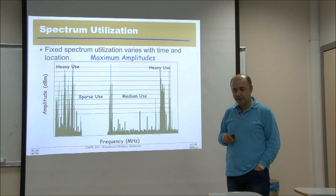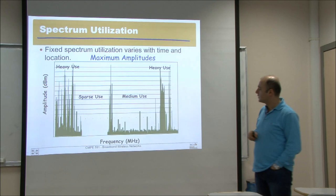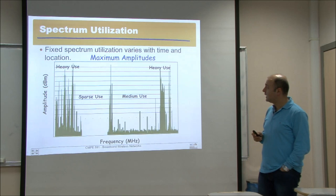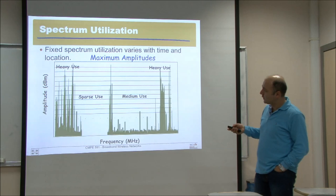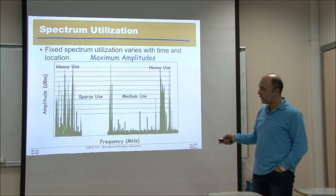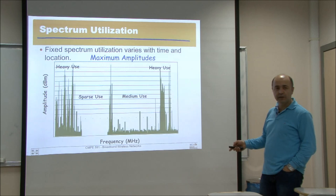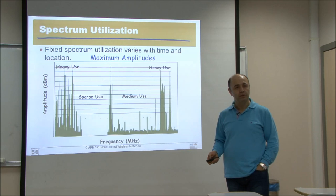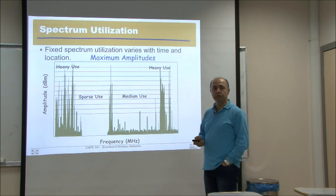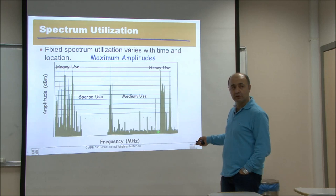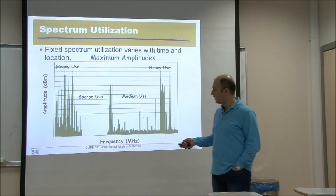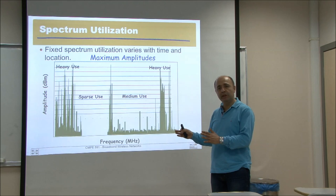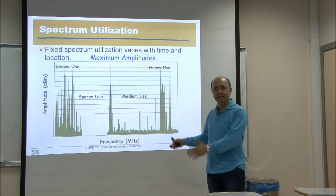Thanks to Professor Ian Aquiles for the slides — most of this chapter reuses his material. This shows spectrum utilization in a given frequency band. The x-axis is the frequency band and the y-axis is the amplitude. Some parts of the band are in heavy use, some in medium use, and some parts may not be used at all. The utilization of the spectrum depends on the frequency.